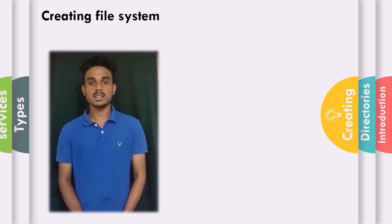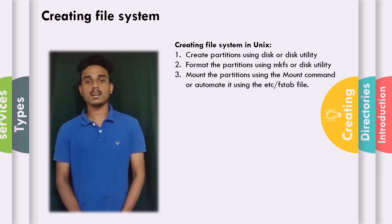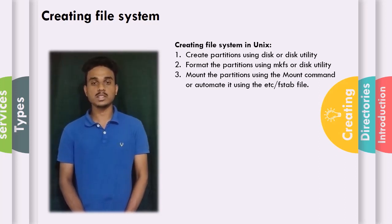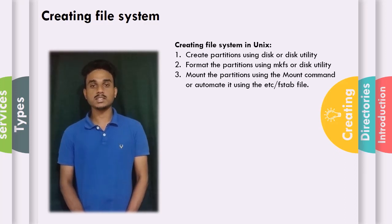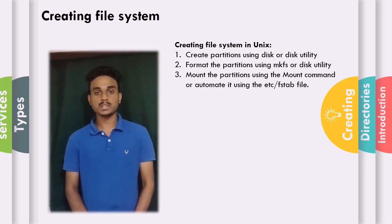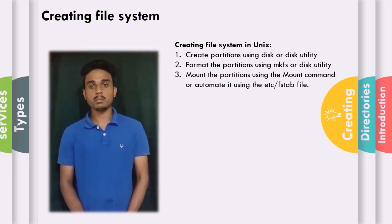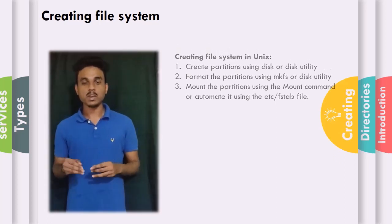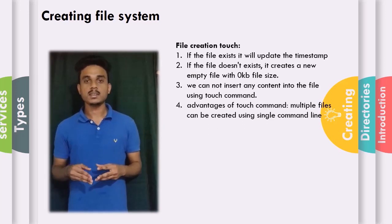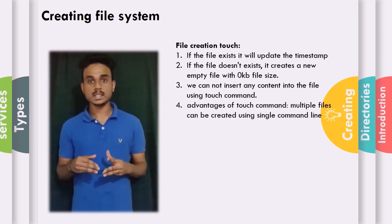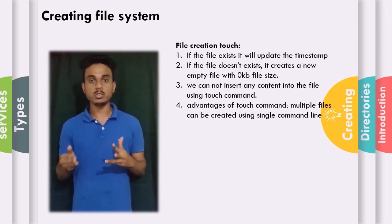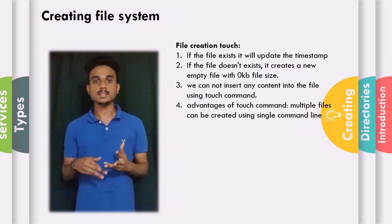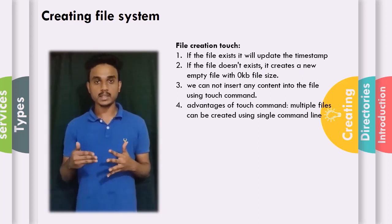There are mainly three steps for creating a file system: create the partition using fdisk utility, format the partition using the mkfs disk utility, and the final step is mounting the partition. We can also use a simple command called the touch command. If the file already exists, it will update that file with a new timestamp.